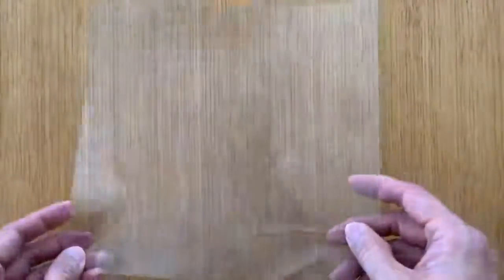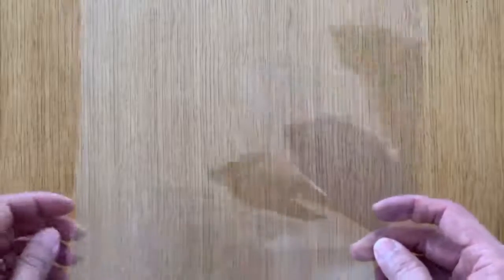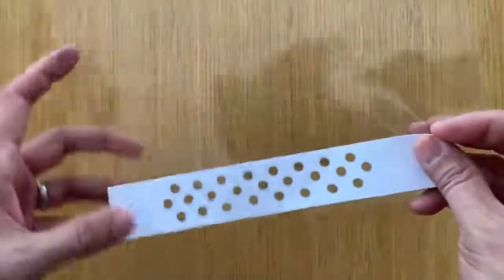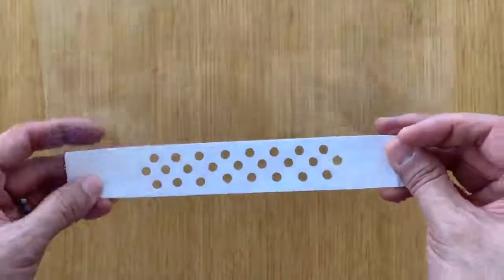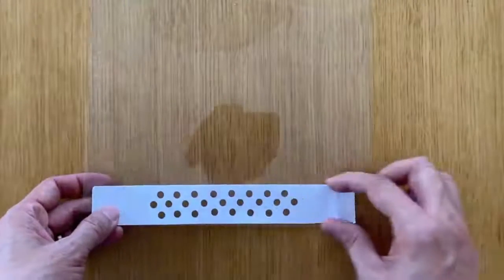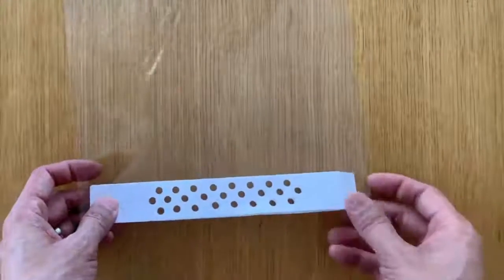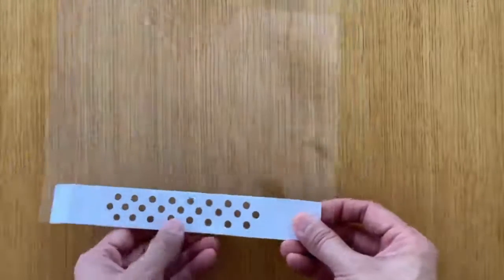Ideally you can get some acetate which I'll put in the description below, you know what type to buy, and then you can just cut one strip, create this pattern like this. You only need a single layer in this case, punch the holes and you're good to go. So I'm going to do that quickly.